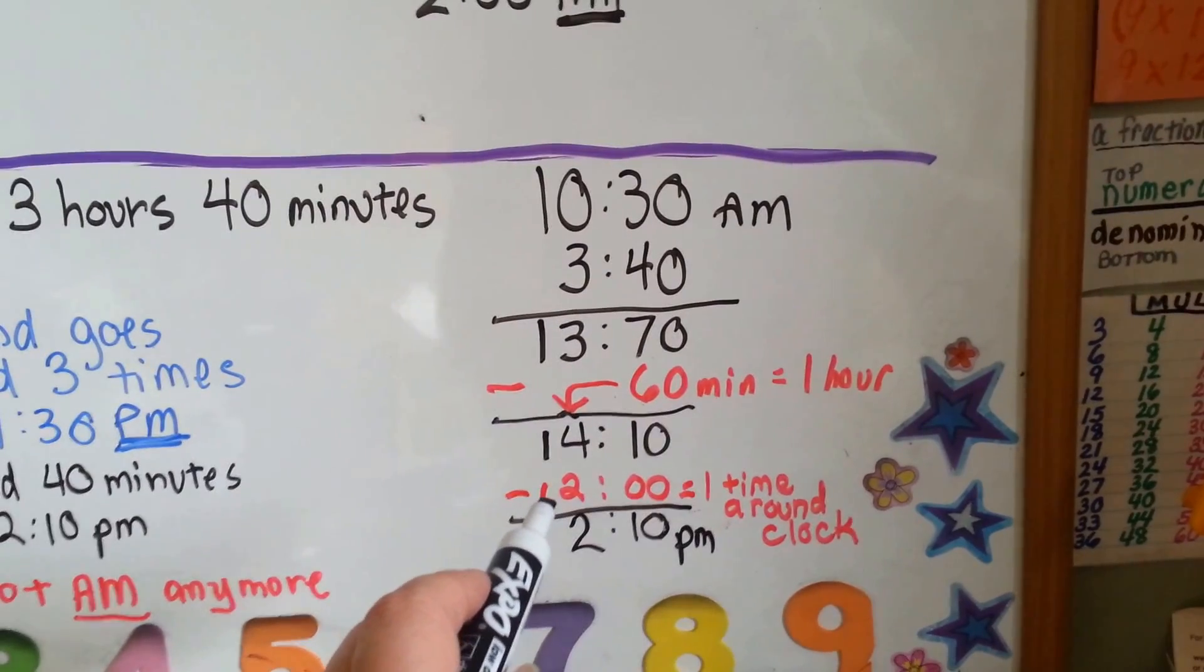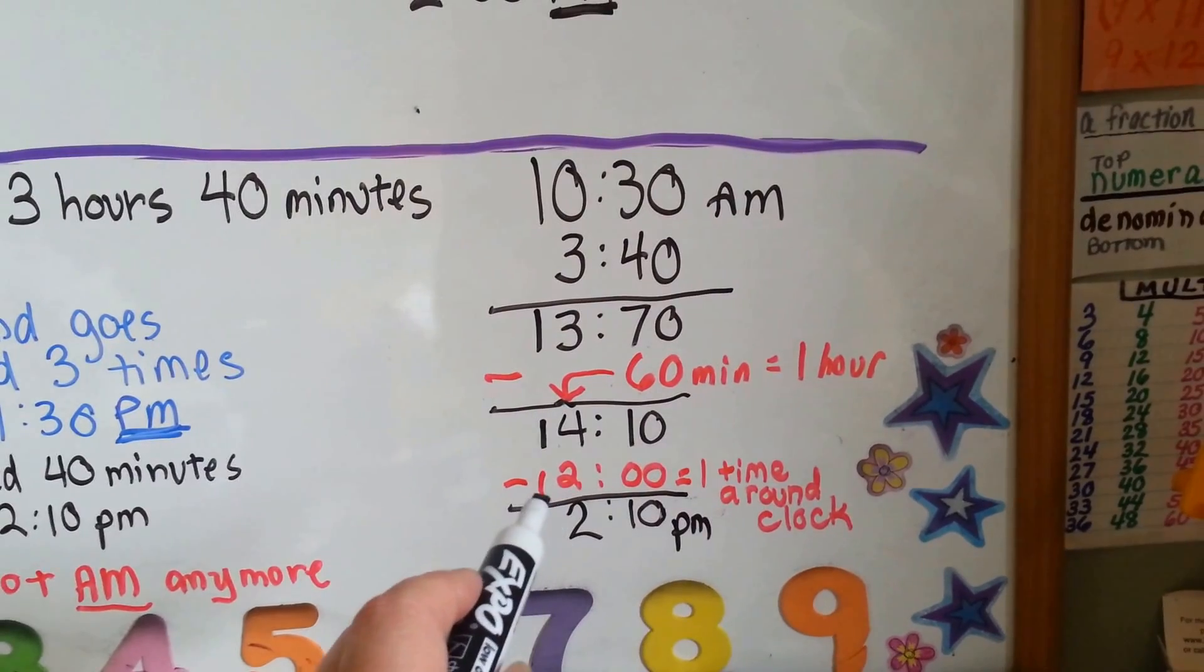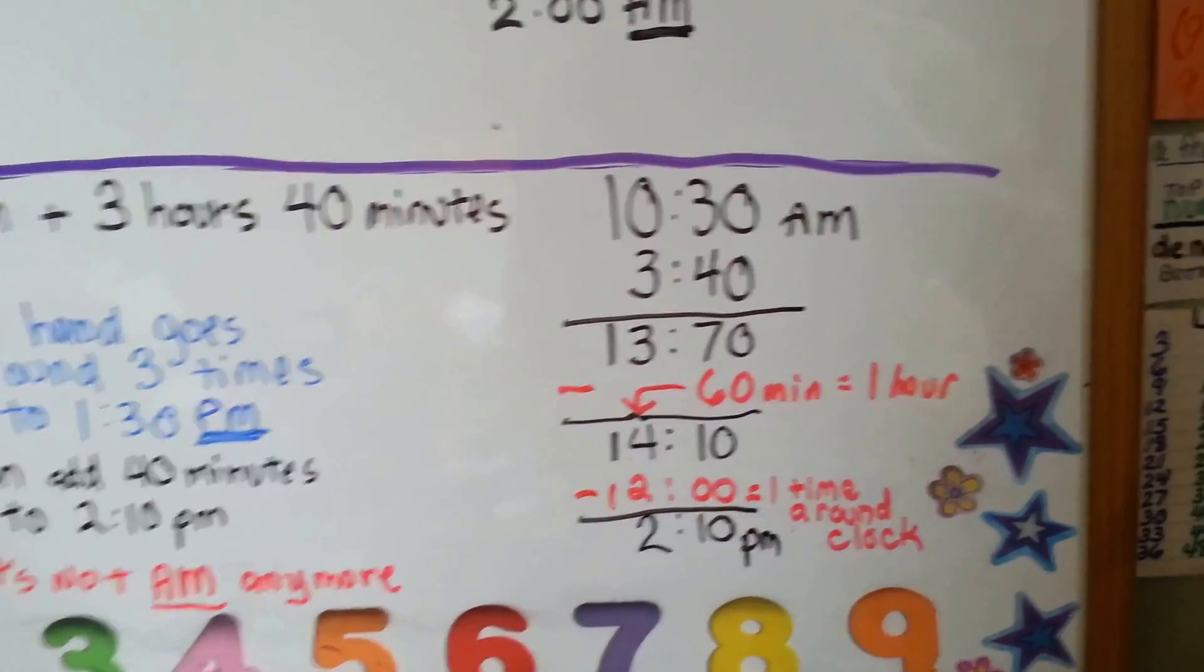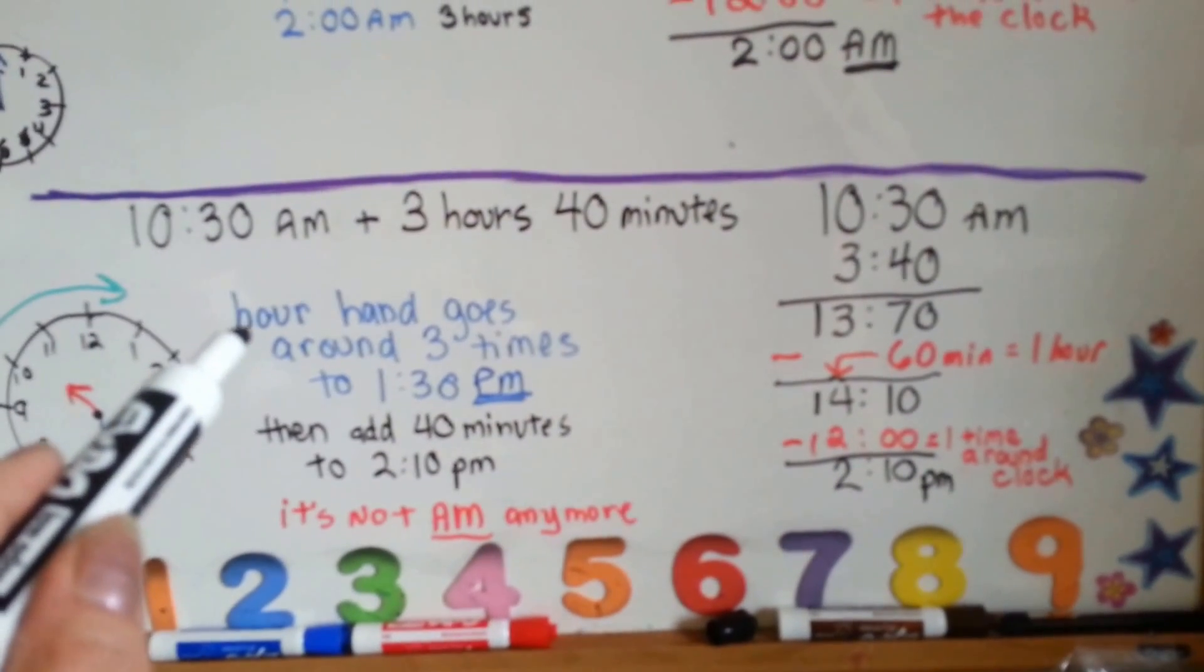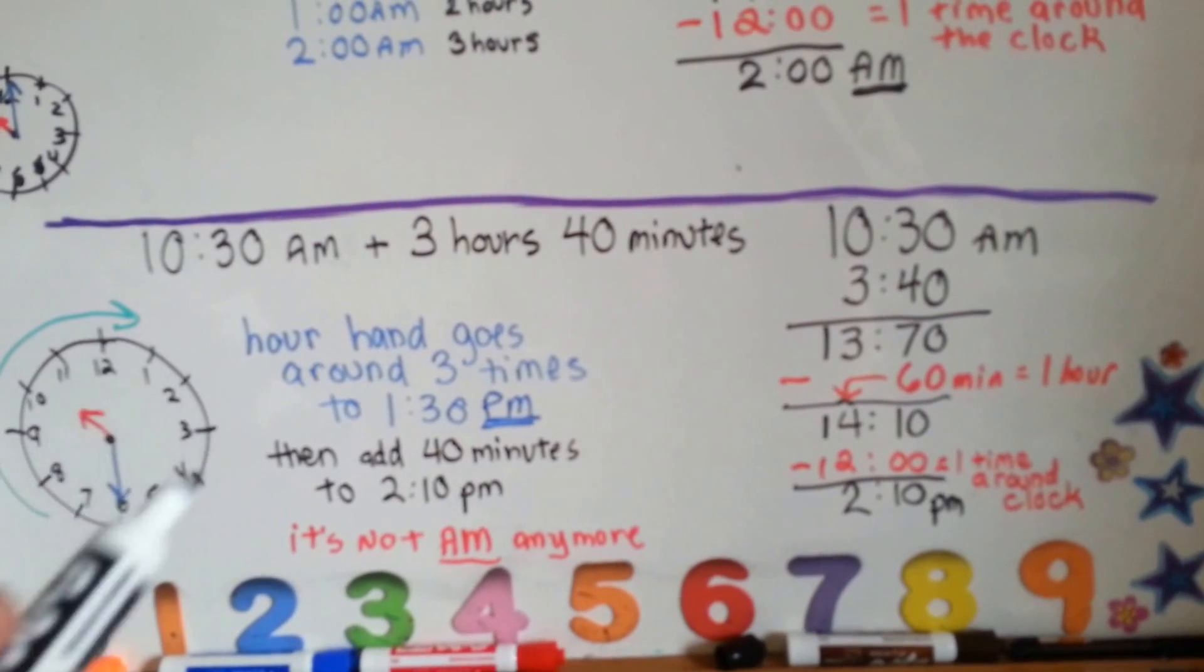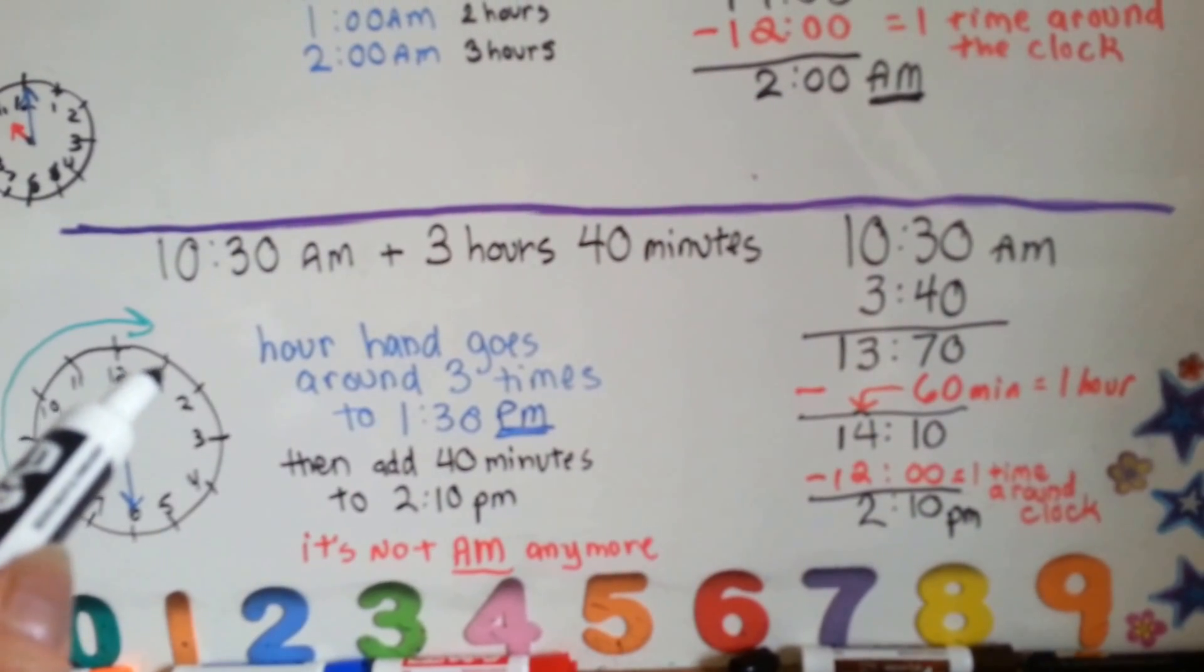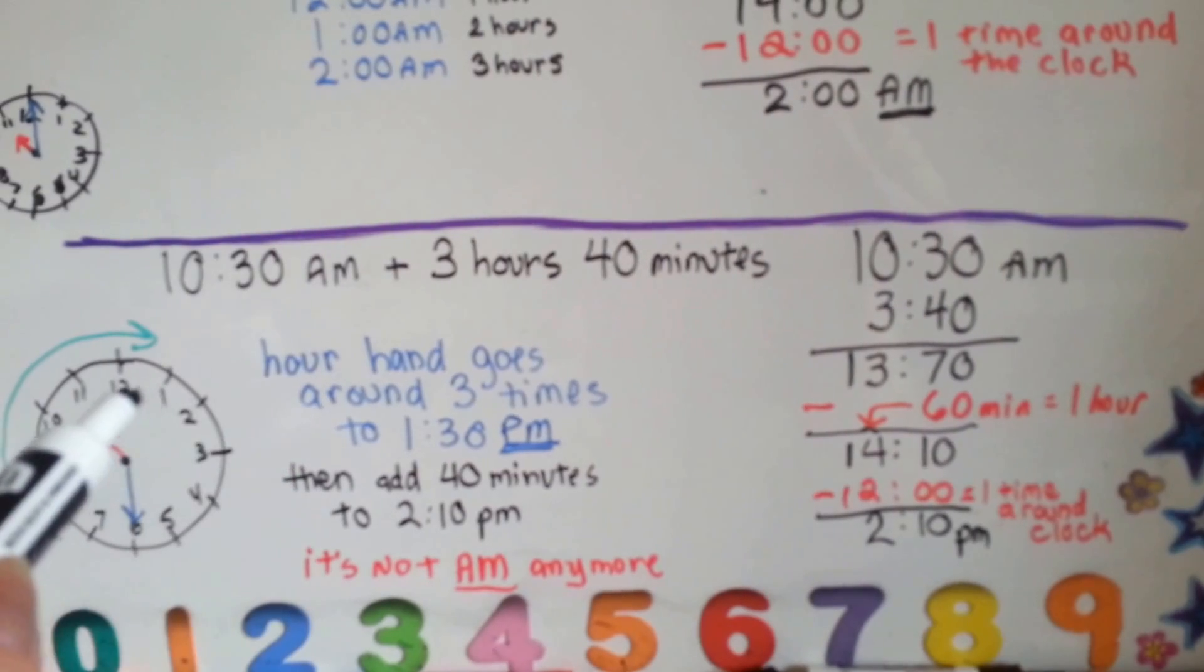Now, we have to take the 12 hours away from this. 14:10 minus 12 is 2:10, and we've changed from PM because we did the 12 hours. Let's see what that looks like on the clock. The hour hand is going to go around 3 times. We're at 10:30, one time around is 11:30, another time around is 12:30, another time around is 1:30. That's 3 times around. So, now we're at 1:30 PM, because it changed from AM to PM when we passed the 12.